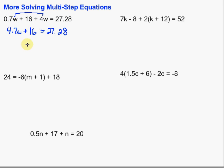Then we want to get that w by itself, so we need to get rid of everything else that's hanging out with it. We do that by doing the opposite of what's there. We've got plus 16, so to get rid of it we do the opposite, which is minus 16. We subtract 16 on both sides, and we get 4.7w equals 11.28.